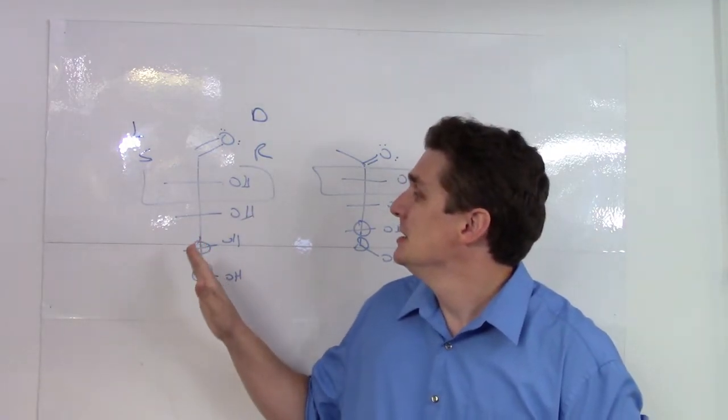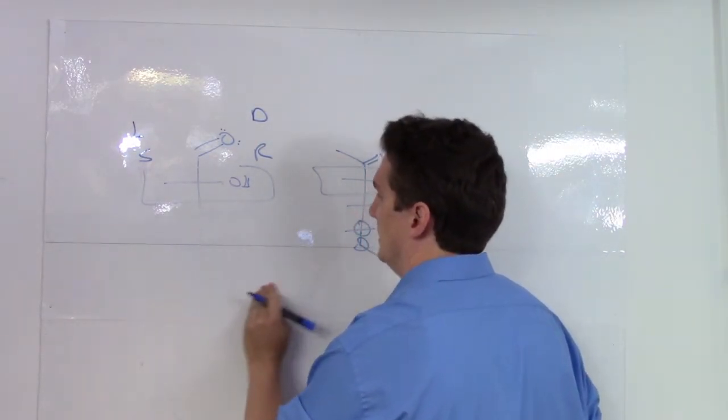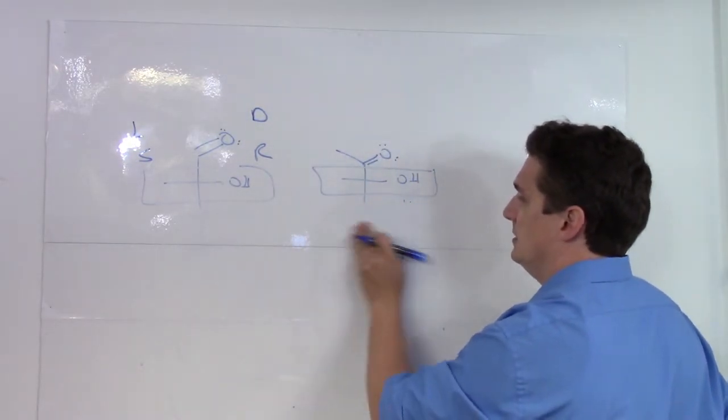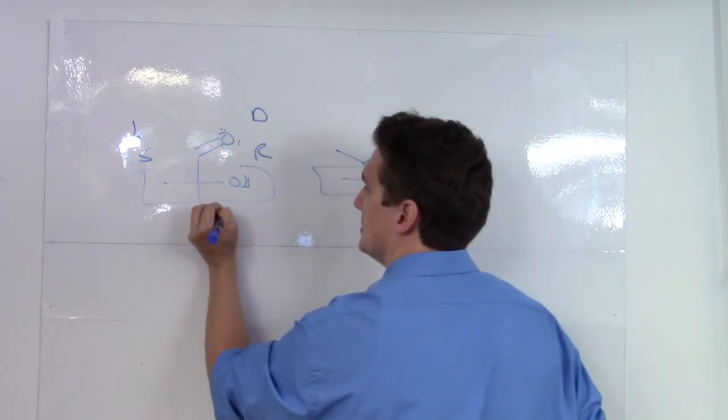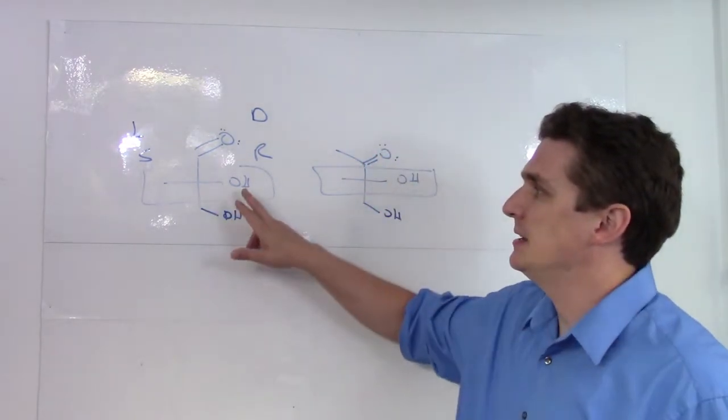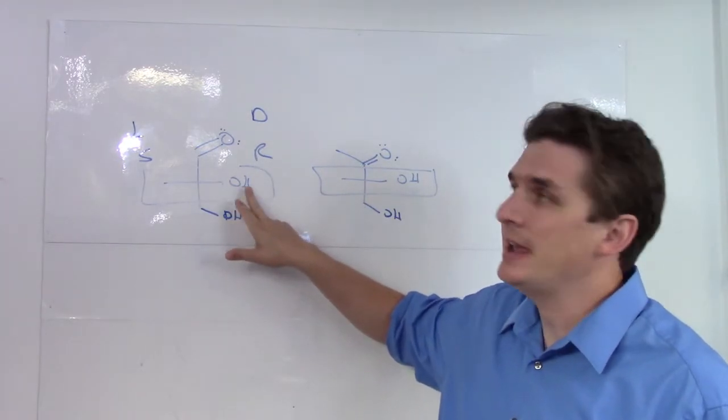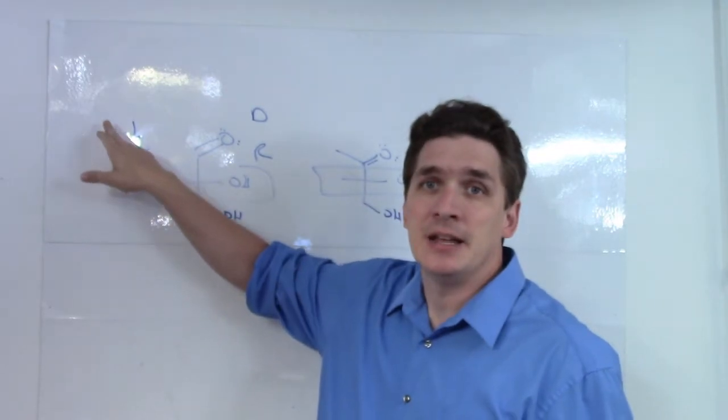But we got very lucky with these. So if we have the simplest of these aldoses and ketoses, it does in fact work out that if the alcohol here is on the right side, it's R and it's dextrorotatory. And if the alcohol is on the left, it's S and it's levorotatory.